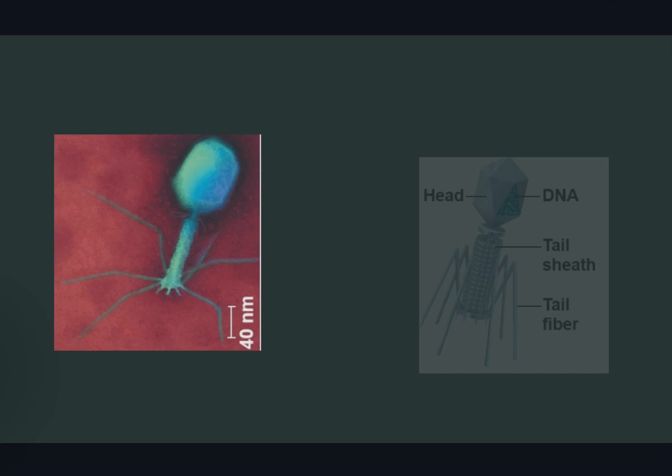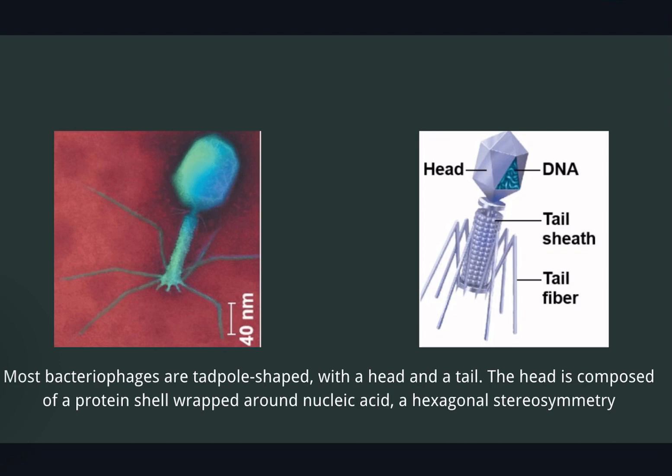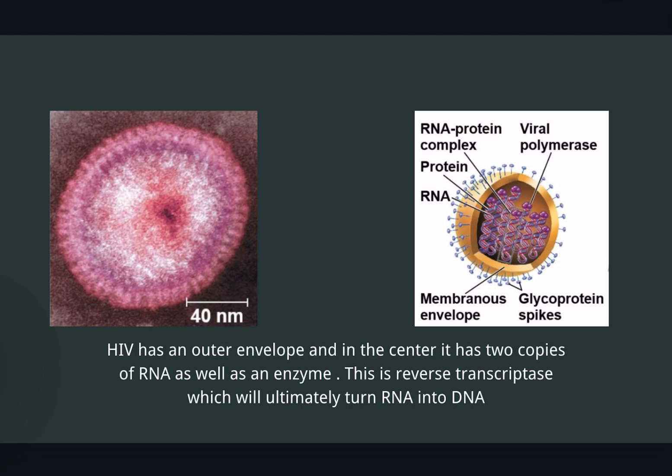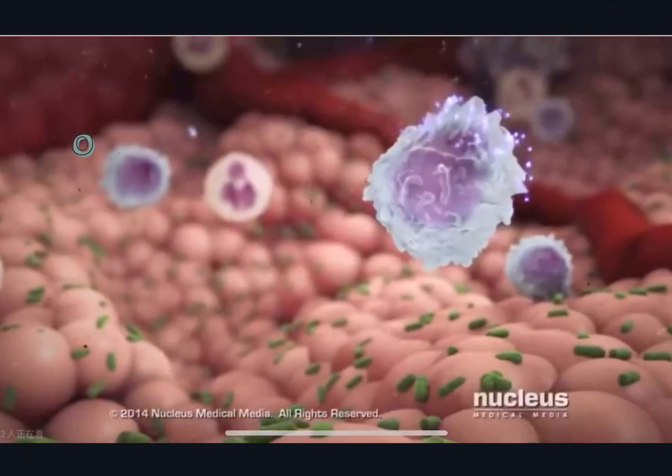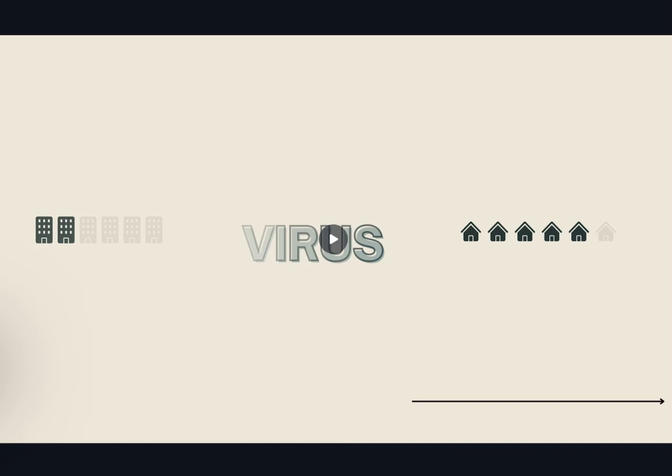Most bacteriophages are typically shaped, with a head and a tail. The head is composed of a protein shell wrapped around nucleic acid, with hexagonal stereosymmetry. HIV has an outer envelope, and in the center it has two copies of RNA, as well as an enzyme — reverse transcriptase — which will ultimately turn RNA into DNA. So this is the structure of the virus.